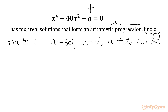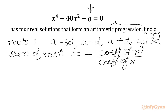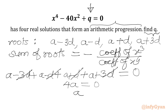Now we are going to use the sum of roots formula using Vieta's method. Sum of roots equals minus the coefficient of x³ over the coefficient of x⁴. So: (a − 3d) + (a − d) + (a + d) + (a + 3d) = 0, since the coefficient of x³ is zero. The d terms cancel, giving us 4a = 0, so a = 0.